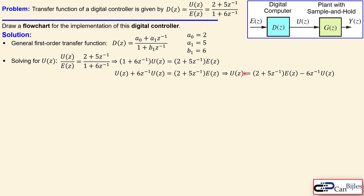This is exactly what we need — an expression for U(z) in terms of the other parameters. The z to the power minus 1 means there is a delay, and z to the power minus 2 means two delays in series. A delay is practically equal to the sample period, and that corresponds to the sample frequency, which is 1 over the sample period.